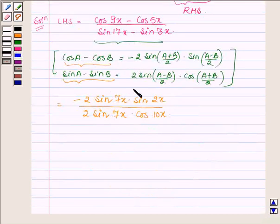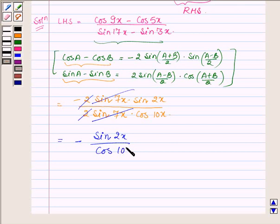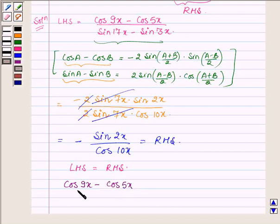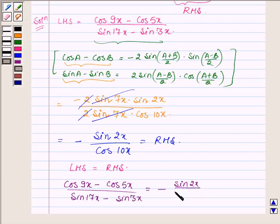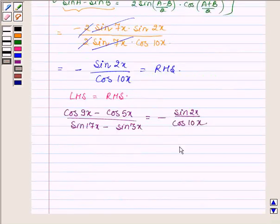Now on simplifying it further, sin 7x cancels out, 2 also cancels out, and we have minus sin 2x upon cos 10x which is the right hand side of the given problem. Thus we have LHS is equal to RHS, or we can say that cos 9x minus cos 5x upon sin 17x minus sin 3x is equal to minus sin 2x upon cos 10x, hence proved.